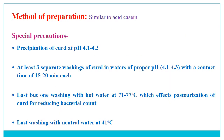The method for preparing edible casein is basically similar to acid casein, but with a few special precautions. These include: precipitation of curd at pH 4.1 to 4.3; at least 3 separate washings of curd in water of proper pH in the range 4.1 to 4.3, with a contact time of 15 to 20 minutes each; the second-to-last washing done with hot water at 71–77°C to achieve pasteurization of curd and reduce bacterial count; and the last washing done with neutral water (not acidic) at 41°C.